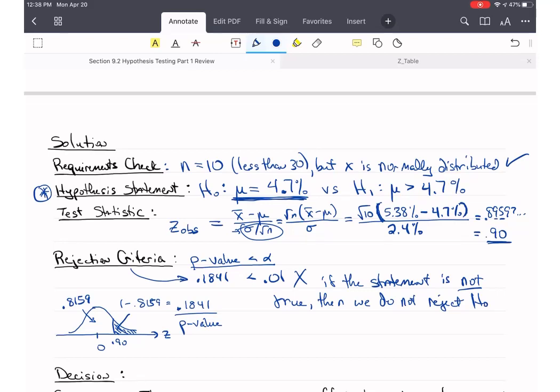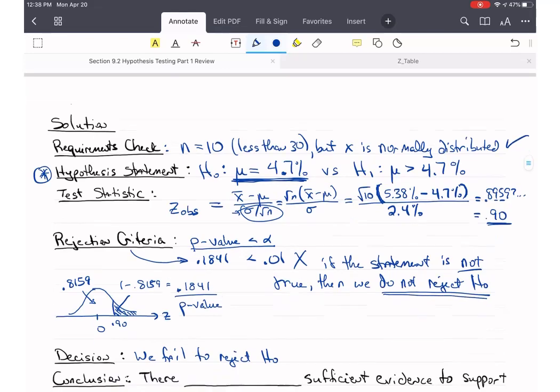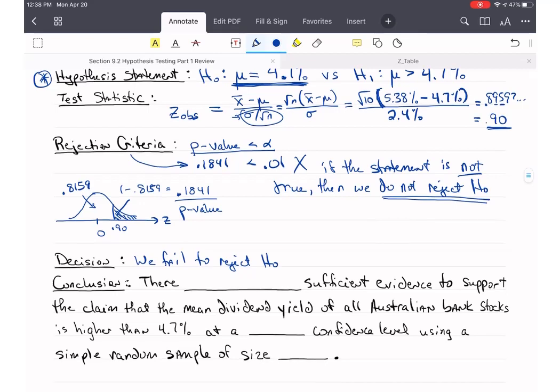So we do not reject H-naught. So the formal way of saying that is we fail to reject H-naught. Now if you say we do not reject H-naught as your decision, I'm perfectly fine with that. I say that myself, so it's perfectly fine. The book is being quite particularly correct, but I'm fine with we do not reject H-naught as well. And if the statement were true, then we would reject H-naught, so we'd say we reject H-naught would be our decision. Remember that the decision and the conclusion are two different things.